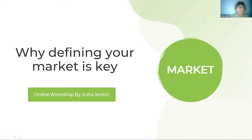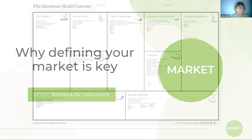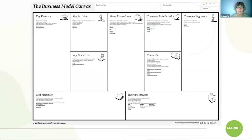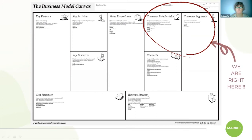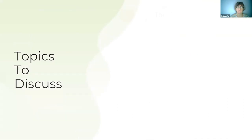Hello everyone, we have reached the stop market. The main question and topic today is about why defining your market is key. We are taking our map to understand the locations where we're going to be surfing around. We started in the middle, in the valuable position, and have now moved to the right side — customer relationships, customer segments, and channels — talking about customers and how to reach them.